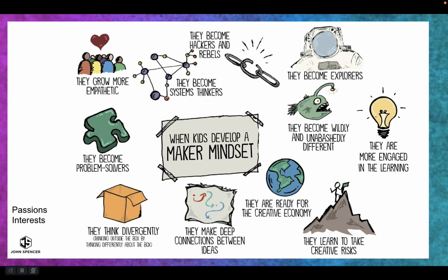John Spencer created this graphic about when kids develop a maker mindset, because that's really what we're after — mindset and culture. We want to help kids develop this maker mindset. It's really important that they become problem solvers, divergent thinkers, that they make connections between ideas, take creative risks, show empathy, and become explorers. We're trying to create thinkers — like at the end of the Disney movie Tomorrowland with George Clooney, we're looking for dreamers. That kind of thing.